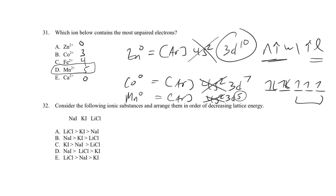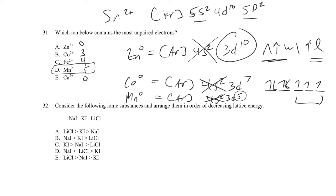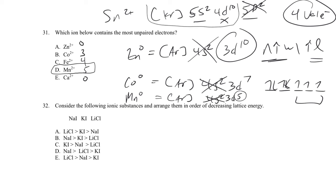For tin, the rule of highest n with highest L applies. Tin's configuration is [Kr] 5S2, 4D10, 5P2. Tin 2+ loses the 5P2 first (highest n, highest L), giving [Kr] 5S2, 4D10. Tin 4+ then loses the 5S2 next, leaving just 4D10. Tin has four valence electrons, like carbon in the same group.